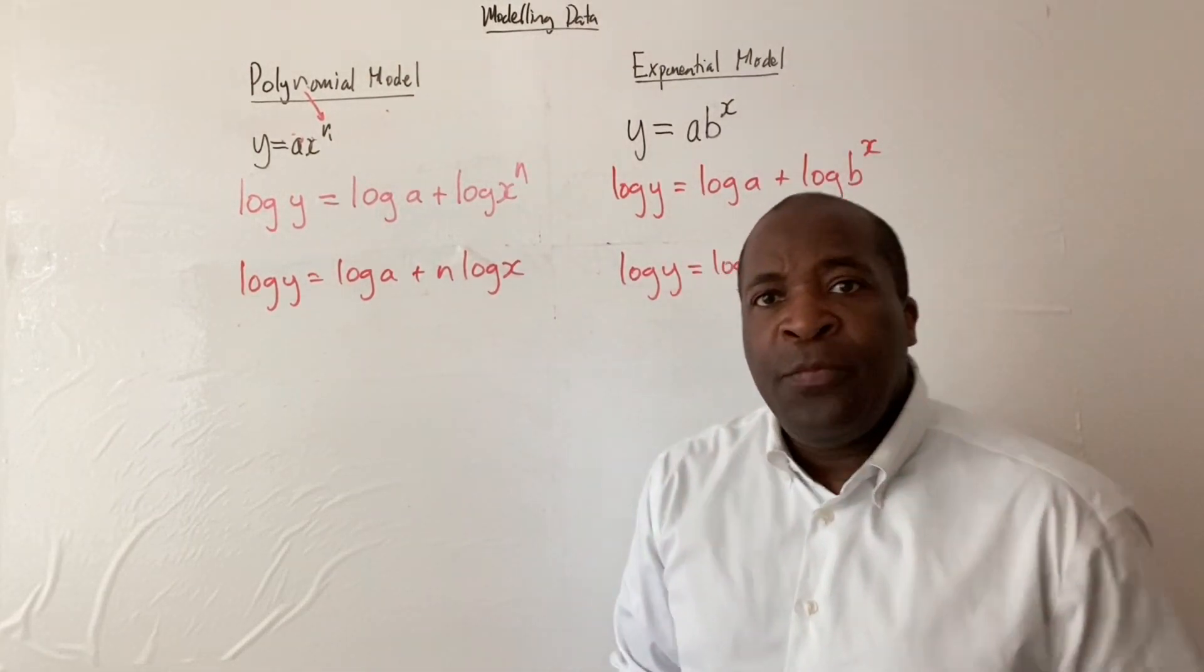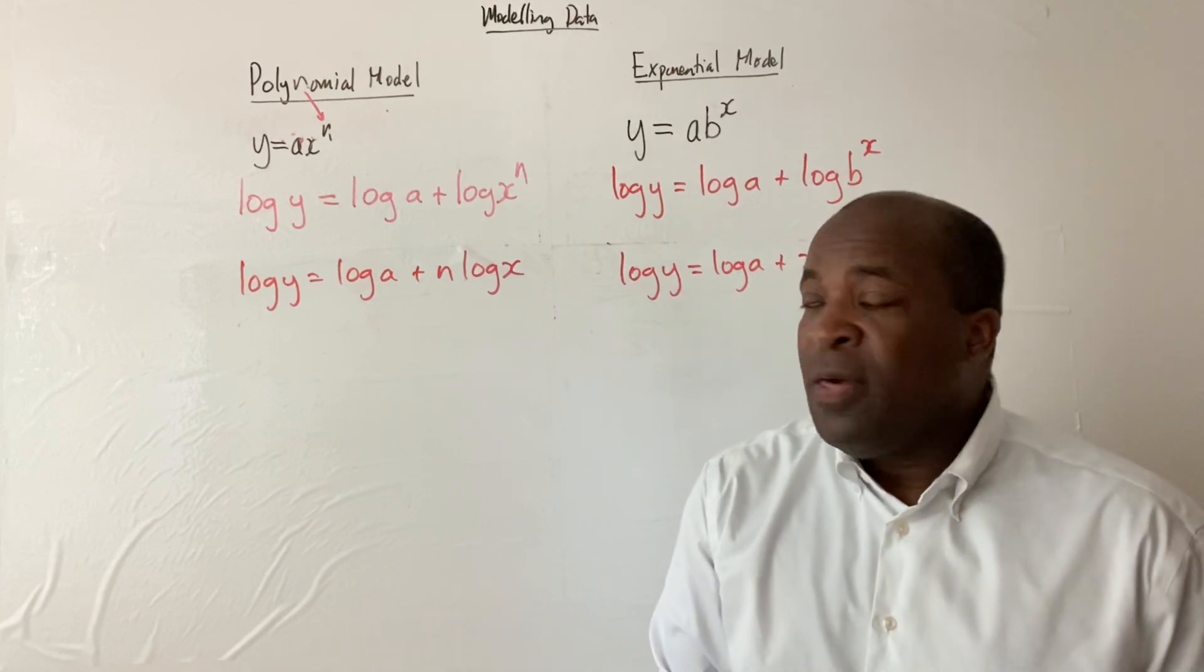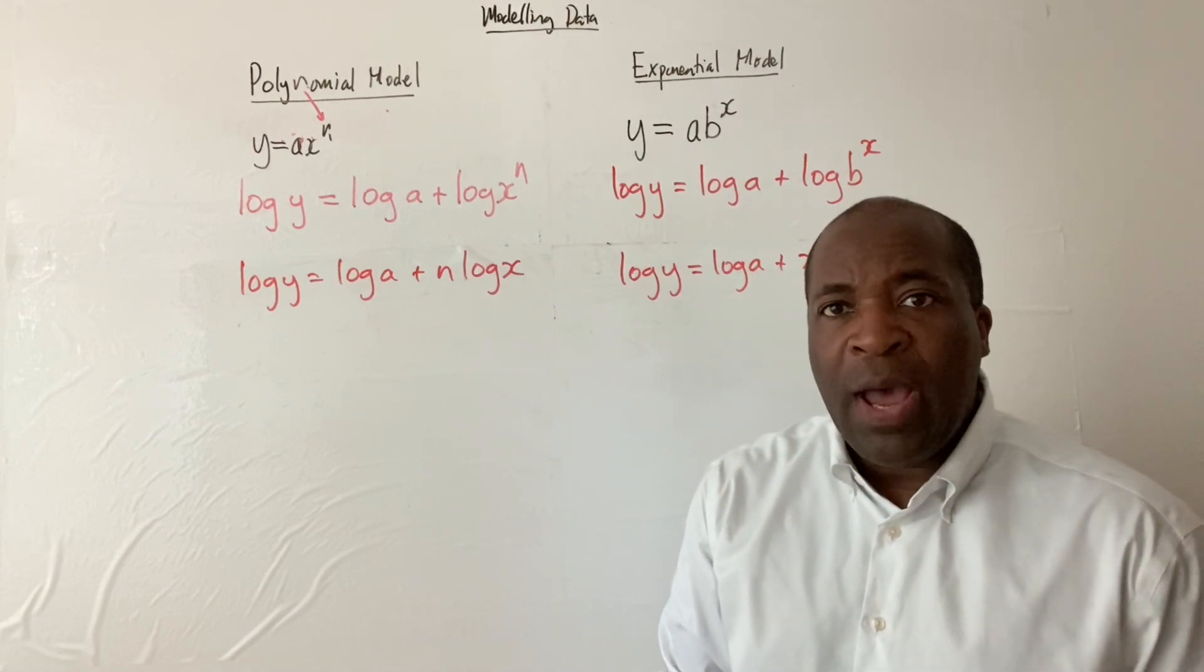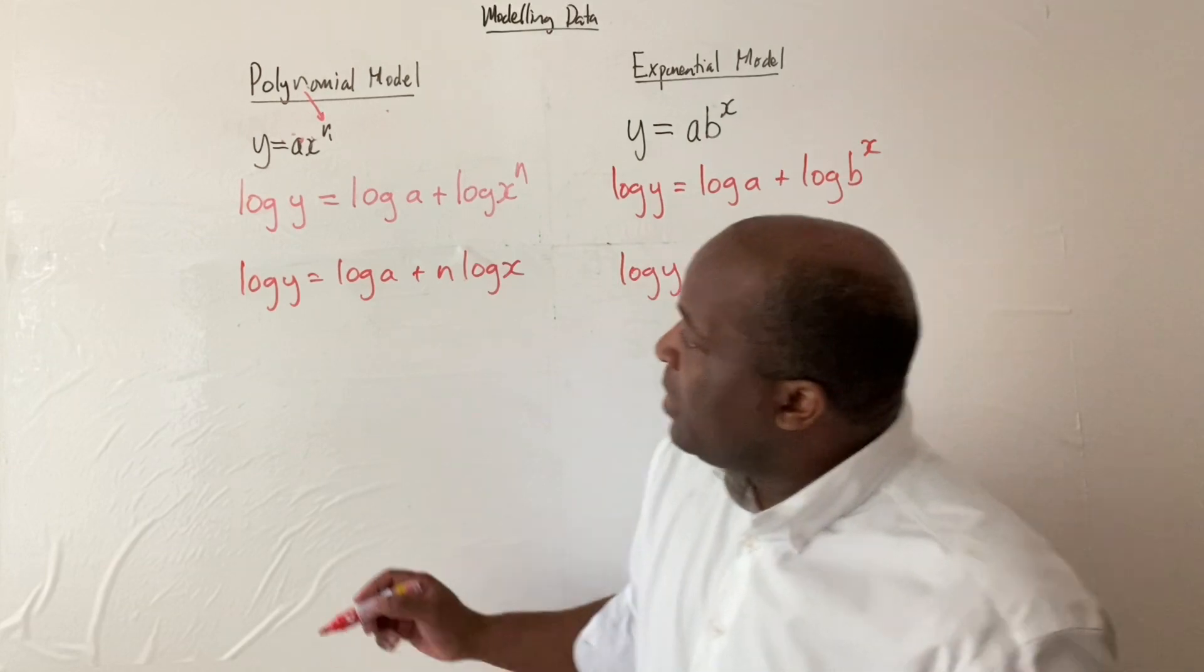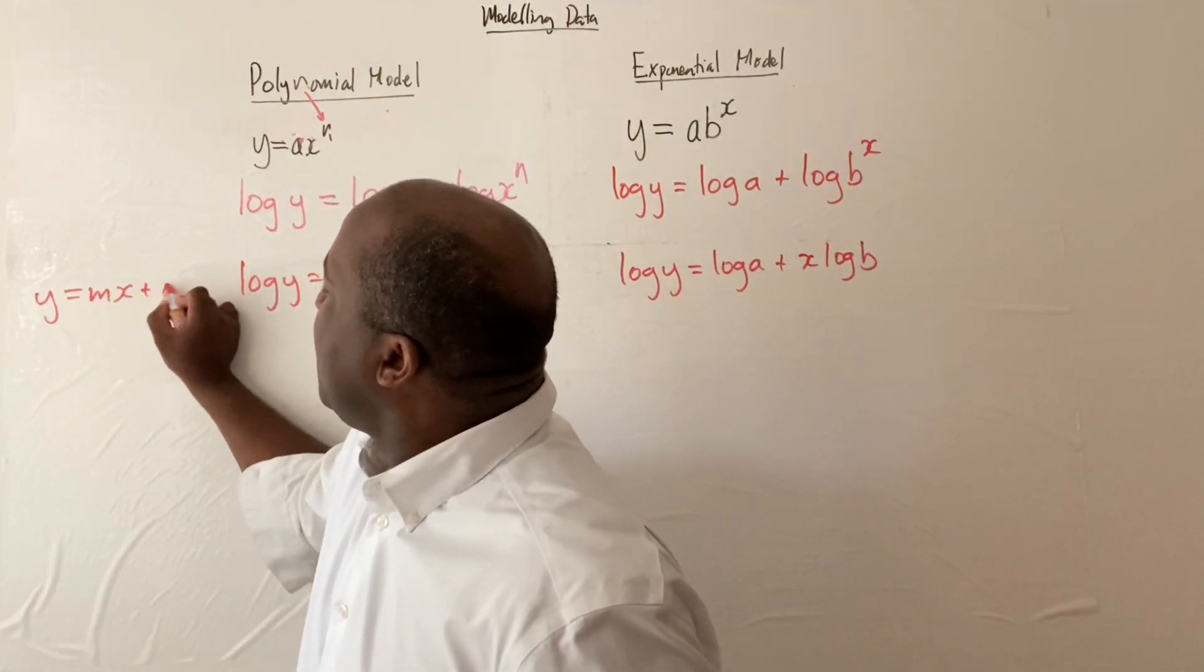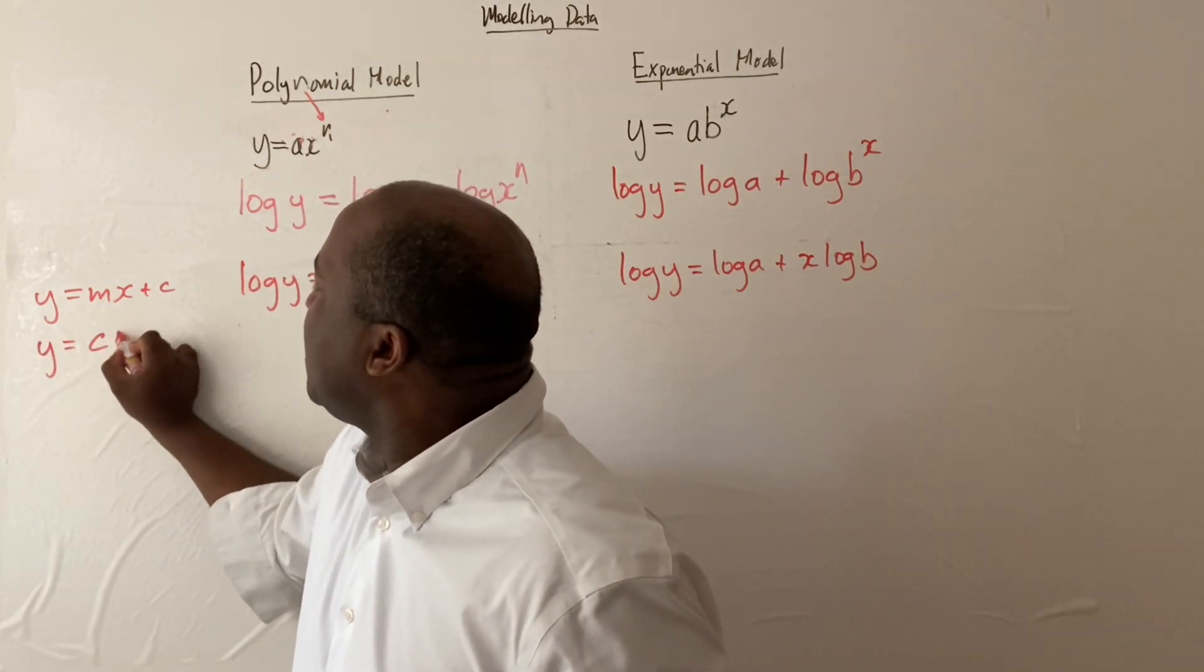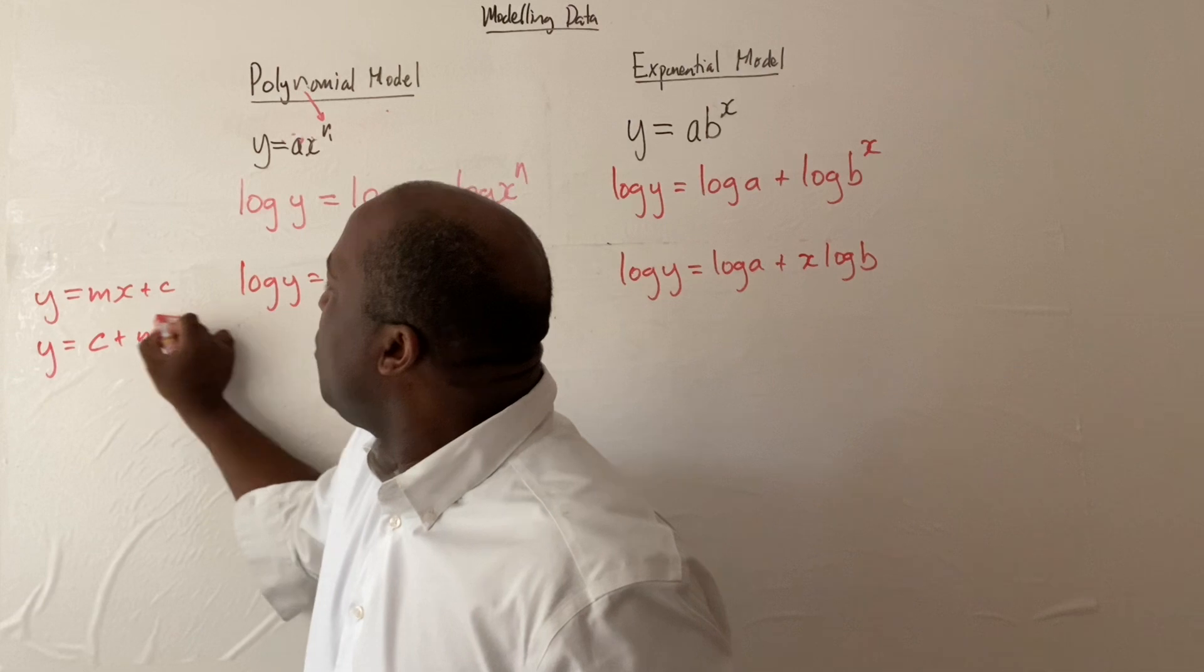Now, as an aside, recall from coordinate geometry that the equation of a straight line is y equals mx plus c. If we know that y equals mx plus c is the equation of a straight line, we can rewrite this as y equals c plus mx.